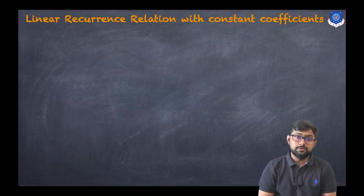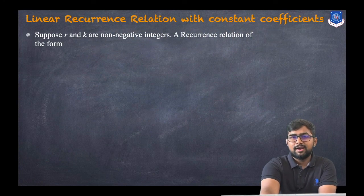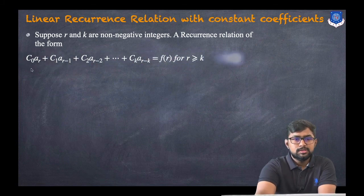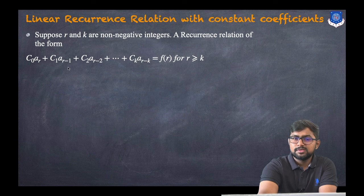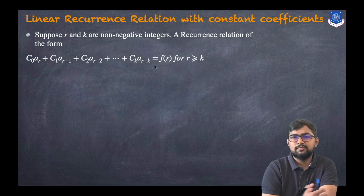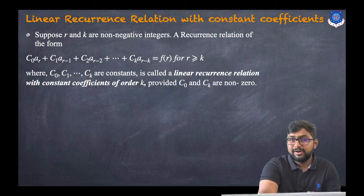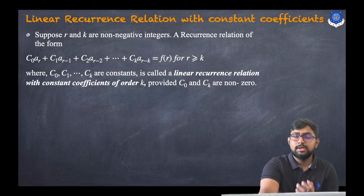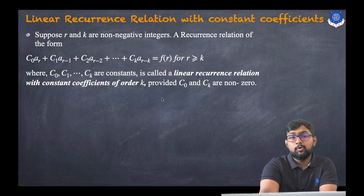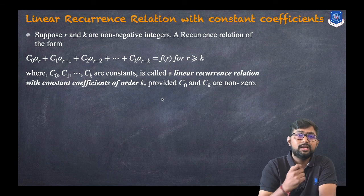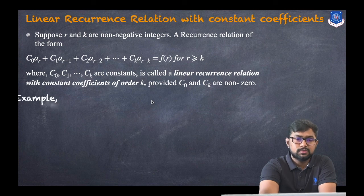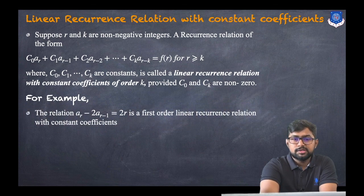Now let us understand what is a linear recurrence relation with constant coefficients. Suppose r and k are non-negative integers. A linear recurrence relation of the form: c_0 * a_r + c_1 * a_{r-1} + c_2 * a_{r-2} + ... + c_k * a_{r-k} = f(r), where r >= k, where c_0, c_1, ..., c_k are constants, is called a linear recurrence relation with constant coefficients of order k.